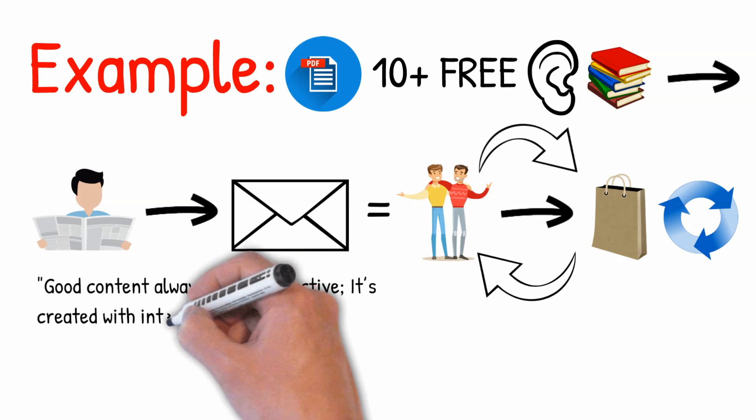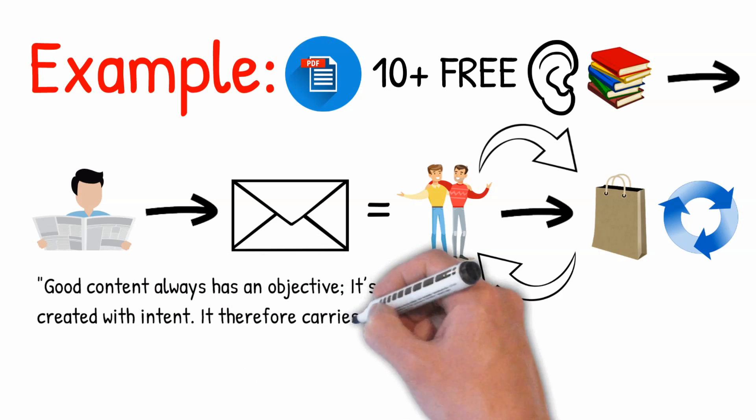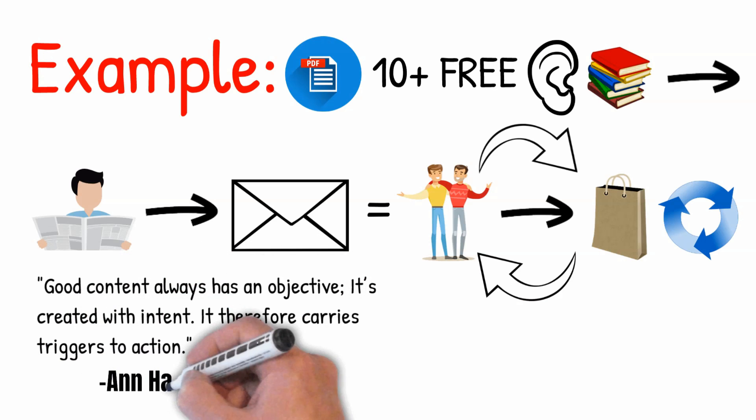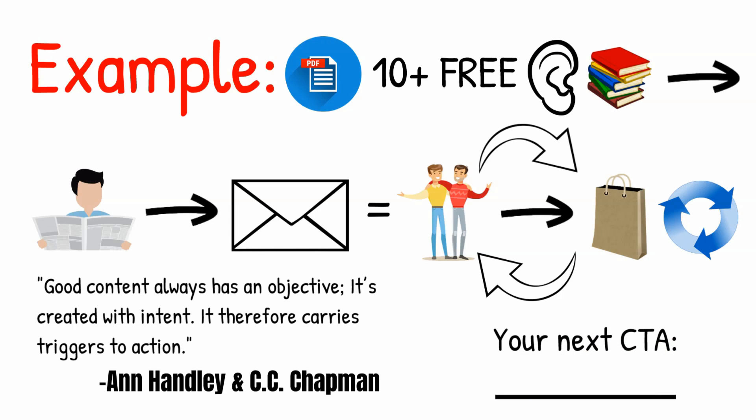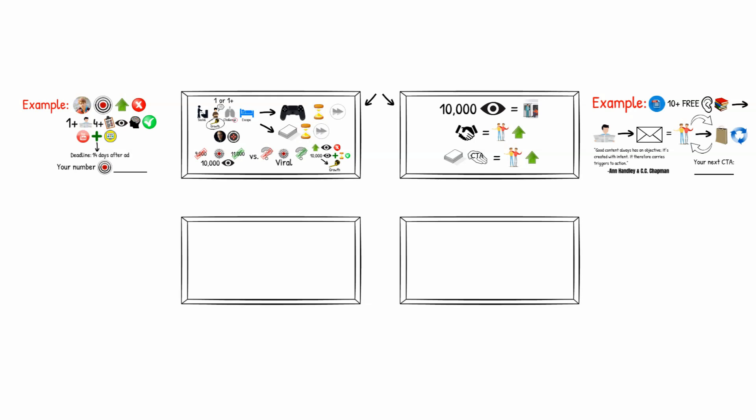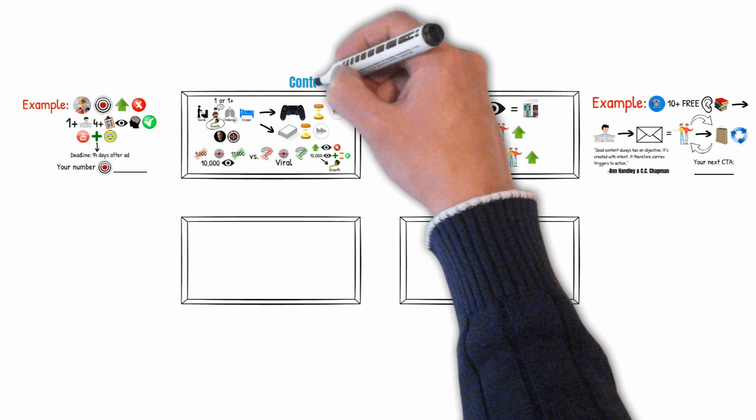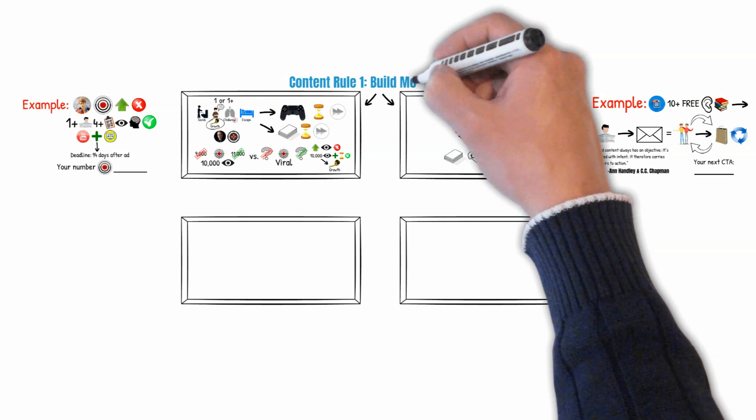In Chapley's words, good content always has an objective. It's created with intent. It therefore carries triggers to action. What is the call to action for your next content piece? You may pause the video now and write it down. Content Rule One is build momentum.